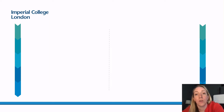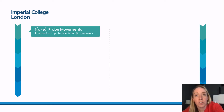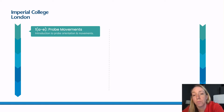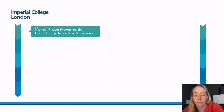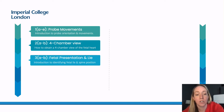I'm going to go through the 10 modules. We start with probe movements — an introduction to probe orientation and all the different degrees of freedom and how those movements relate to the ultrasound image on screen. We then move on to the four-chamber view, how to obtain a four-chamber view of the fetal heart. Then we look at fetal presentation and lie, identifying fetal presentation, lie and spine position.